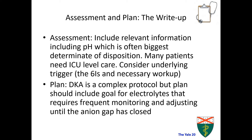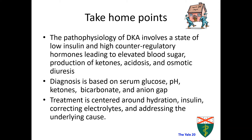What I hope you take away from this presentation is that the pathophysiology of DKA involves a state of low insulin and high counter-regulatory hormones, leading to elevated blood sugar, production of ketones, acidosis, and osmotic diuresis. Diagnosis is based on serum glucose, pH, ketones, bicarbonate, and anion gap. The treatment of DKA is centered around hydration, insulin, correcting electrolytes, and addressing the underlying cause. Thank you so much for listening. I hope you enjoyed the Yale 20 video on diabetic ketoacidosis.